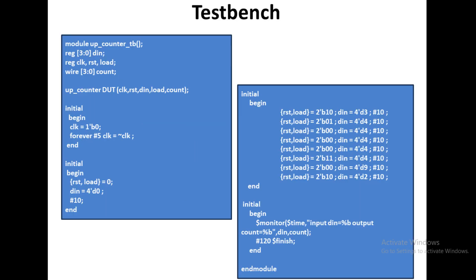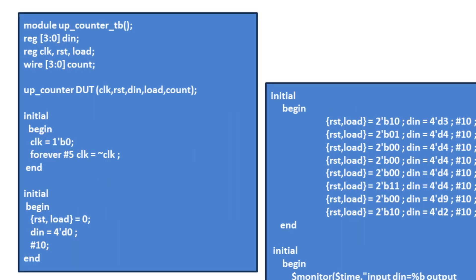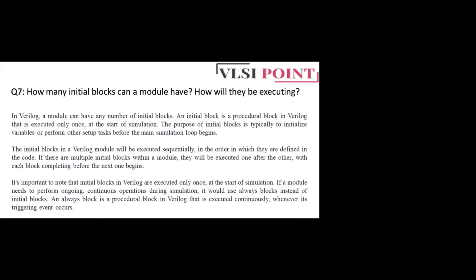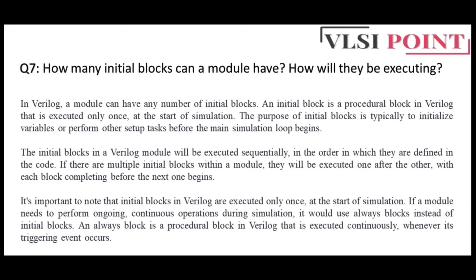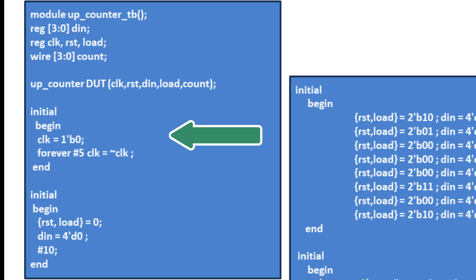Now we will see the testbench part. The module is up_counter_tb with reg type inputs and wire type outputs. We have done the instantiation — up_counter dut with all input/output signals. There are multiple initial blocks. As I mentioned in a previous video, there can be multiple initial blocks in Verilog code, and their simulation depends on the order in which they are written. In the first initial block, we initialize the clock signal — assigning zero then using forever with a delay to toggle the clock.